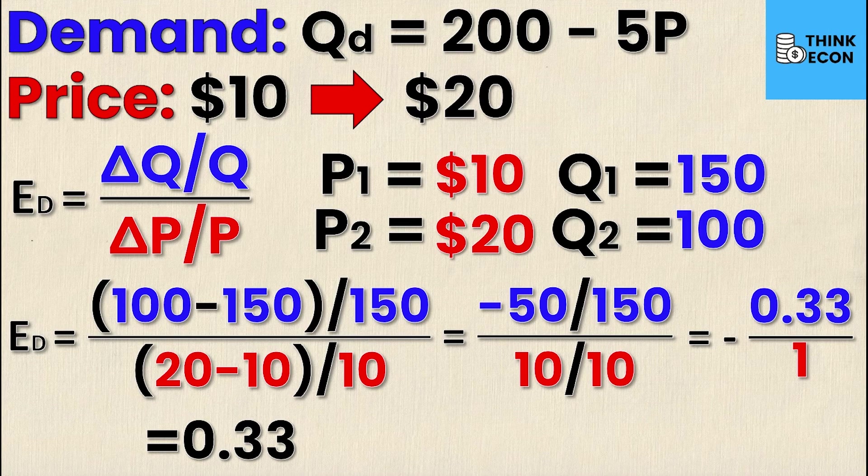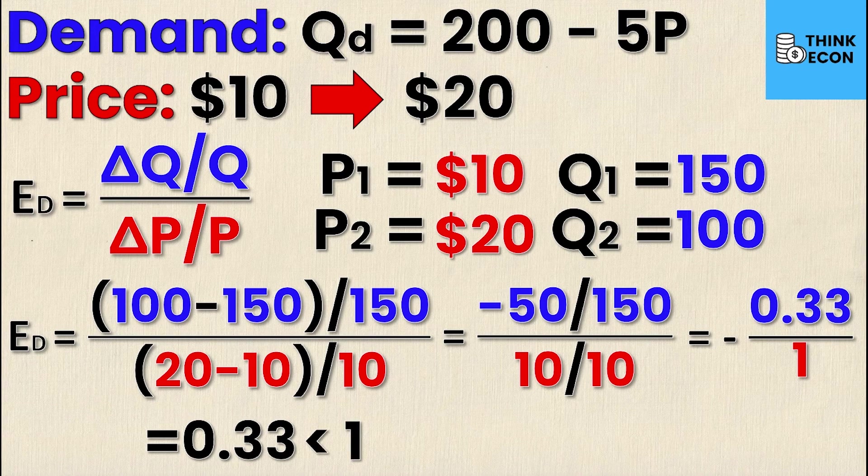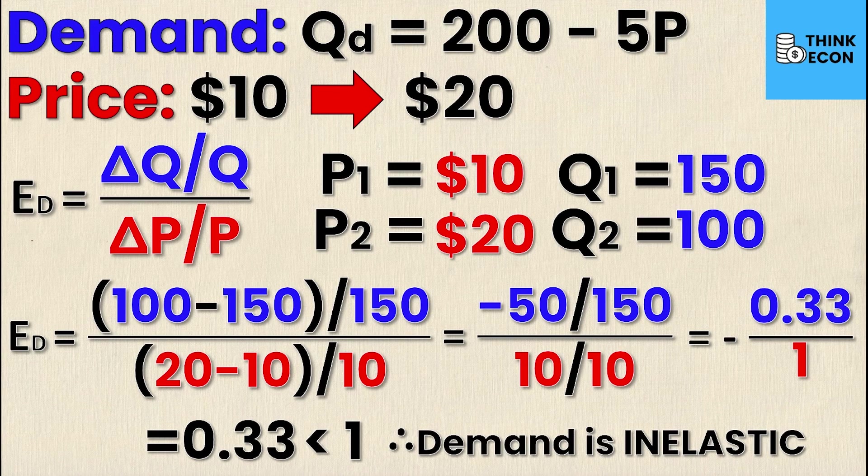So because those act in opposite directions, elasticity of demand for a normal good will always be negative. Anyways, assuming that you have that knowledge, we take the absolute value which is 0.33. That is obviously less than 1, and since it's less than 1 we can deduce that demand must be inelastic. And that's all there is to it.